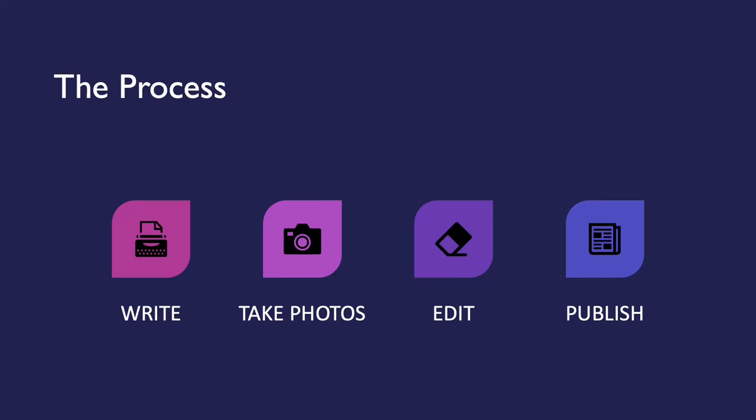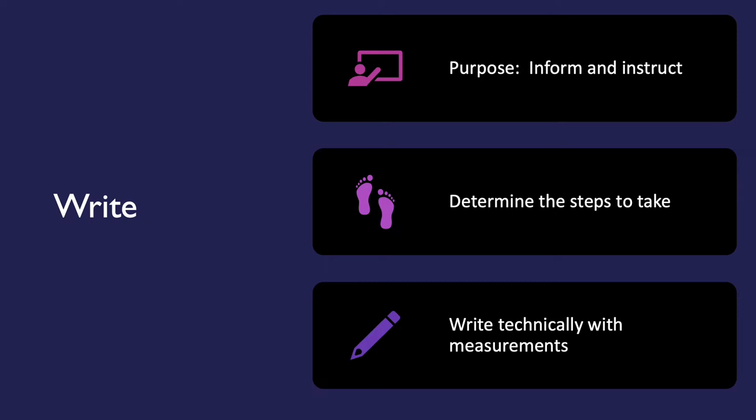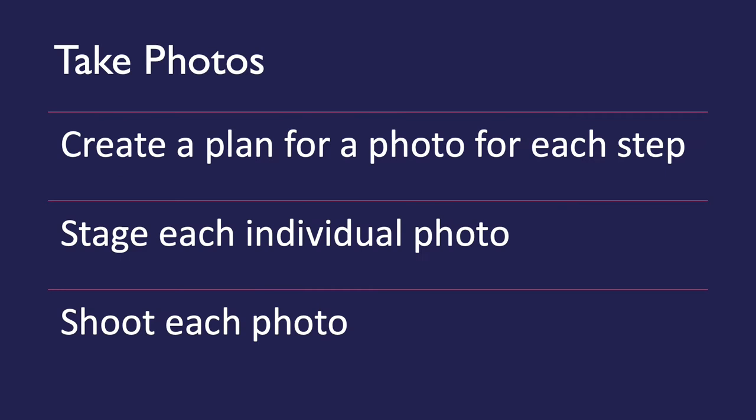First, the author wrote a rough draft of the article. The purpose was to inform and instruct, so she had to determine the steps needed to complete the task she was instructing on — in this case, creating a quilt. She also had to use technical terminology and measurements to be precise.